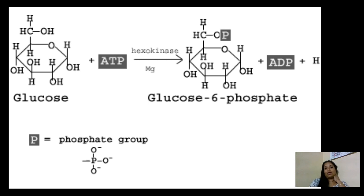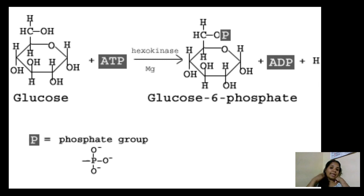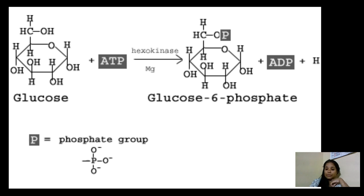Now we are going to discuss the 10 steps of glycolysis. In the first step, a phosphate group is attached to a molecule of glucose — specifically onto the sixth carbon — forming glucose-6-phosphate. This reaction is catalyzed by the enzyme hexokinase, and one molecule of ATP is consumed in this step.